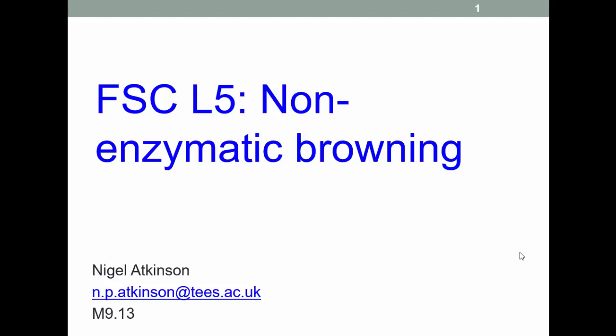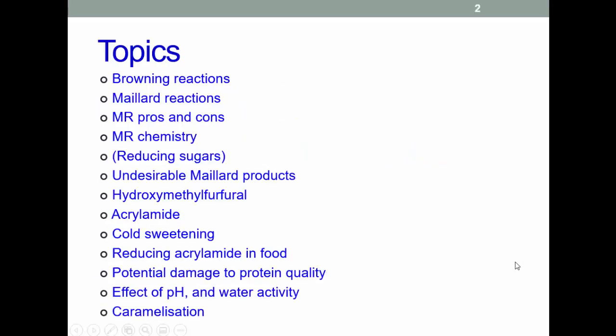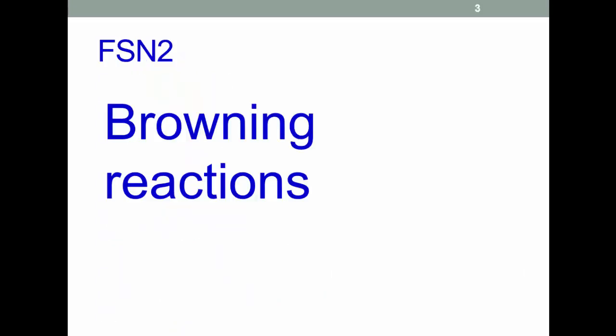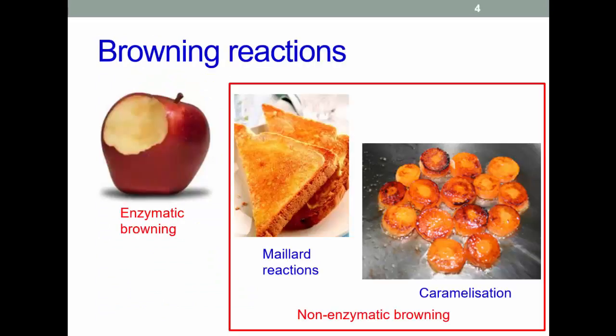This is lecture five on non-enzymatic browning, which will be quite a lengthy lecture with at least two, maybe three parts to the video. There are two main classes of browning reactions associated with food: those caused by enzymes, and those caused by chemical reactions unmediated by enzymes. We'll be discussing enzymic browning in another lecture; here we concentrate on non-enzymic browning reactions.